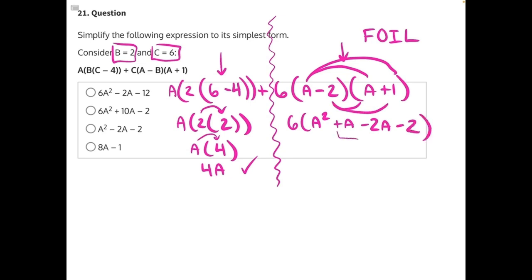Now we can combine our like terms within the parentheses. A positive A, if it exists, there's always one of them. So positive 1A minus 2A would leave us with a negative 1A, or just a negative A. So we can rewrite this as 6 times A squared minus A minus 2.